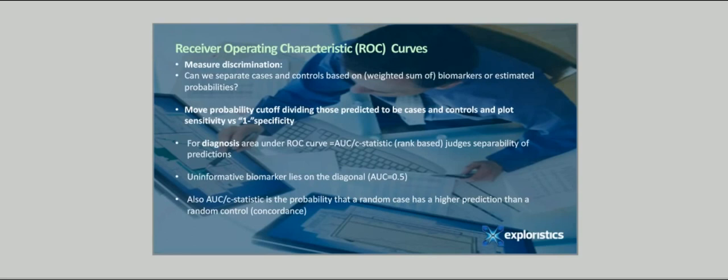Receiver operating characteristic curves. These plots assess the discriminatory ability of a biomarker or model by plotting the sensitivity versus one minor specificity for all cutoffs. It can be applied to individual biomarkers or the predictions from a joint model of a number of biomarkers and other predictors. The area under the rock curve, called the AUC or C statistic, measures the separability of cases and controls. If a biomarker or the predictions from a model are totally uninformative, the rock curve lies on the 45 degree diagonal. This means that for any cutoff, the proportion of cases and controls exceeding the cutoff are the same. The biomarker has the same description in cases and controls and is uninformative. The AUC or C statistic is also the probability that a random case has a higher prediction than a random control, so-called concordance.